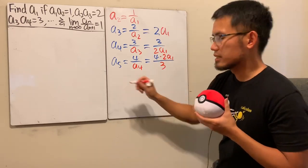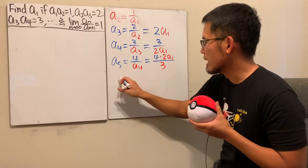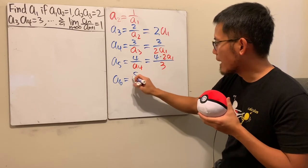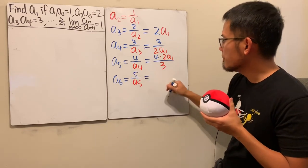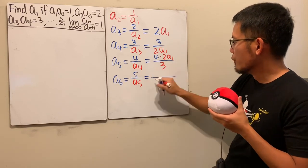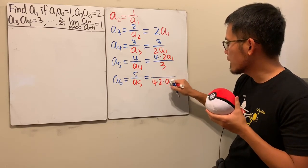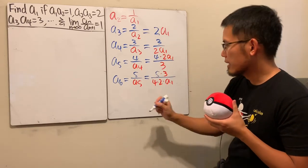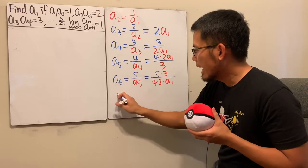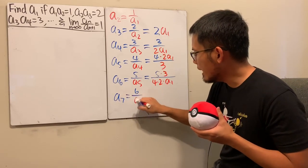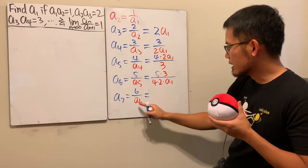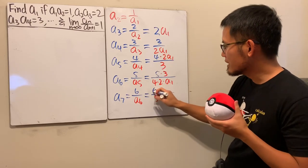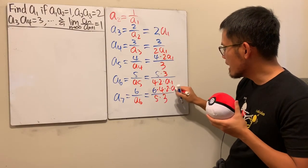Continuing: a6 = 5/a5, which gives us (5·3)/(4·2·a1). Then a7 = 6/a6, putting a6 on the bottom, so we have 6·4·2·a1 on top and 5·3 on the bottom.